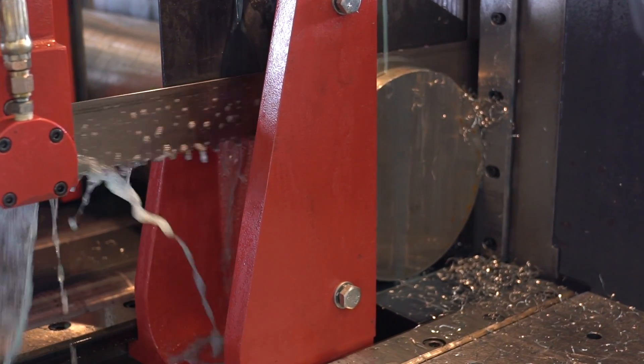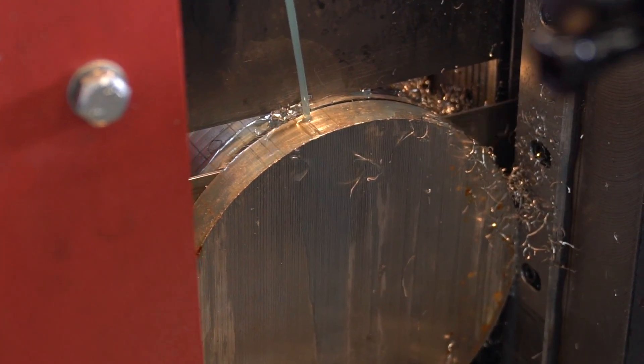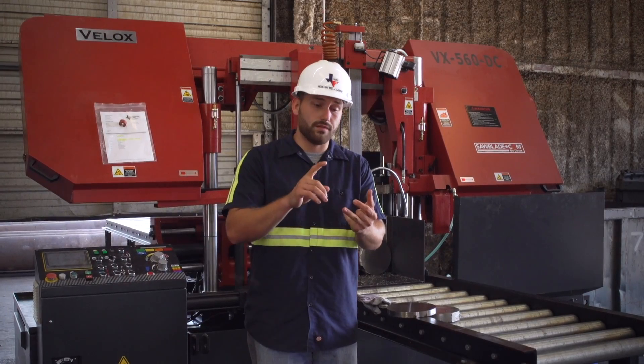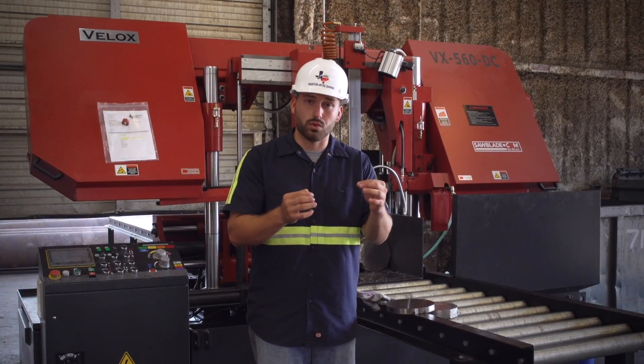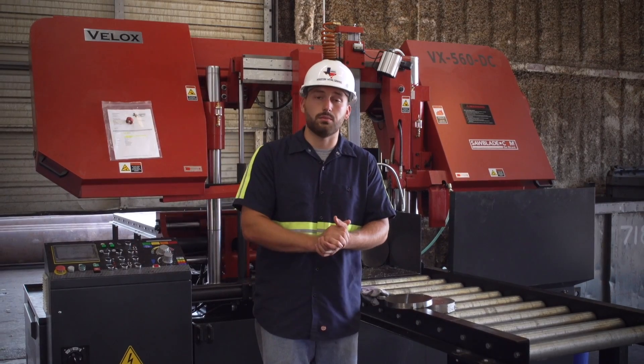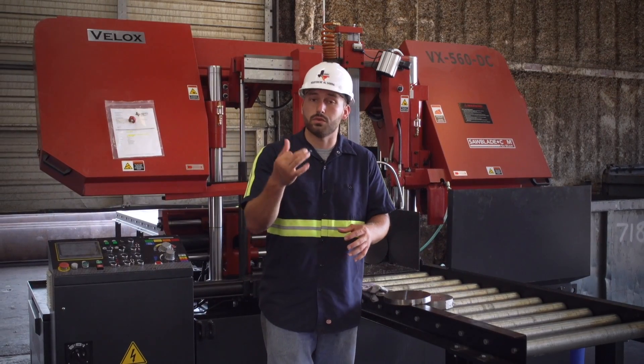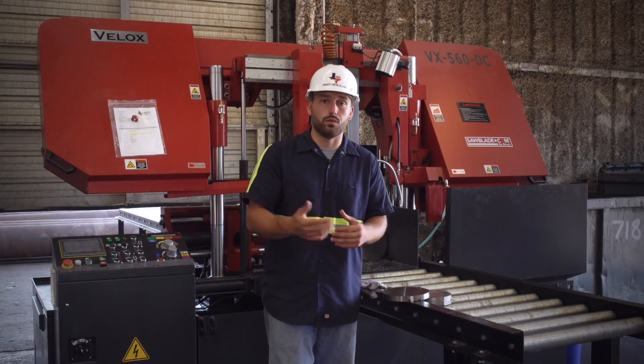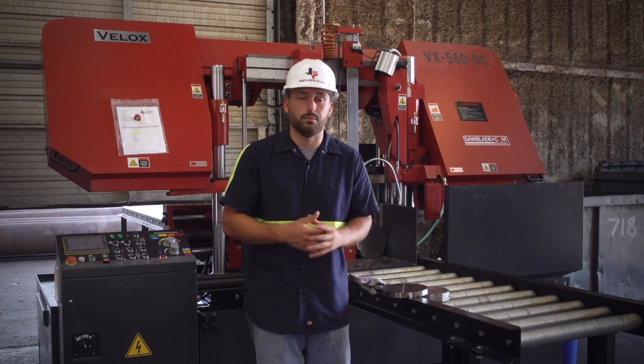In exotic alloys the chip should be the same color of the material when you started. Also if you notice that you have a straw like chip that's real thin and hair like, you're probably running too fast on a blade speed, or if the curlicue is too tight more than likely you're overfeeding that blade and you're probably going to have a little blade deflection.